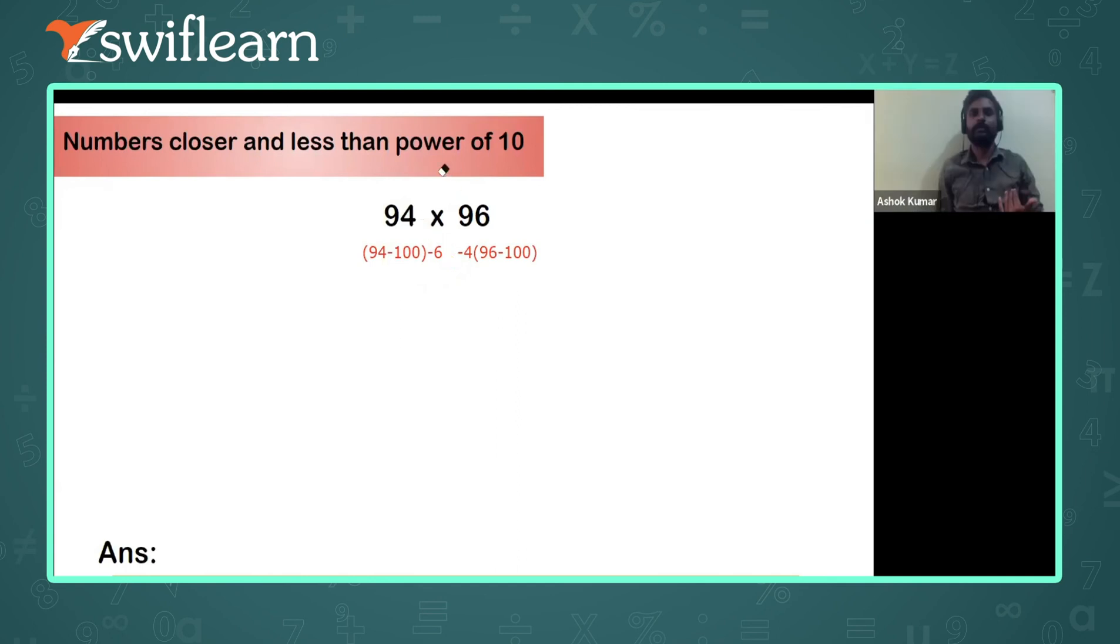So here you can see, this is your second step. After that you have to subtract. The second step is what? Subtraction. So subtraction with this. So how do we subtract? 94 minus 4 is the first one, or you can take it as 96 minus 6.